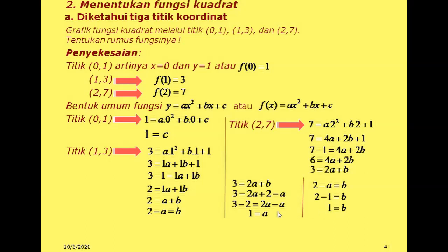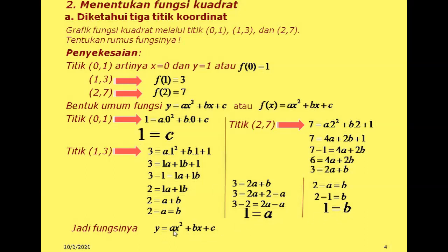Sekarang kita sudah mendapatkan 3 nilai: A-nya 1, B-nya 1, C-nya juga 1. Kemudian kita masukkan ke bentuk umum. A, B, C kita ganti: A-nya 1, B-nya 1, C-nya juga 1. Sehingga rumus fungsinya menjadi f(x) sama dengan x kuadrat plus x plus 1. Angka 1 boleh tidak dituliskan sebagai koefisien.